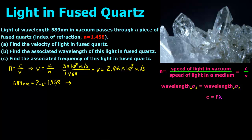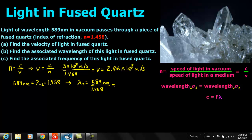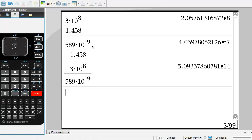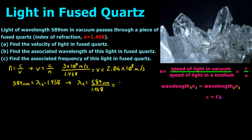We take wavelength 1, which is 589 nanometers, and N1 is just 1. So it equals wavelength 2 times N2, which is 1.458. Rearranging to find wavelength 2, we get wavelength 2 equals 589 nanometers divided by the index of refraction for fused quartz, which gives us 404 nanometers.